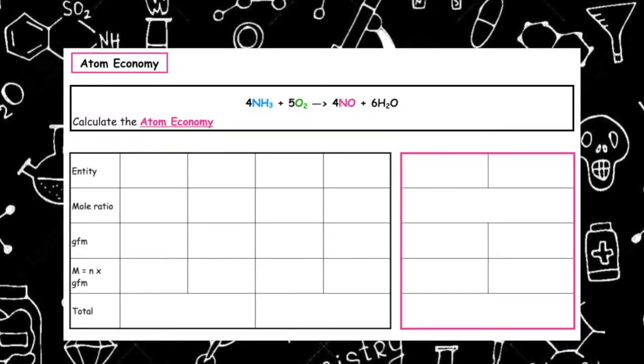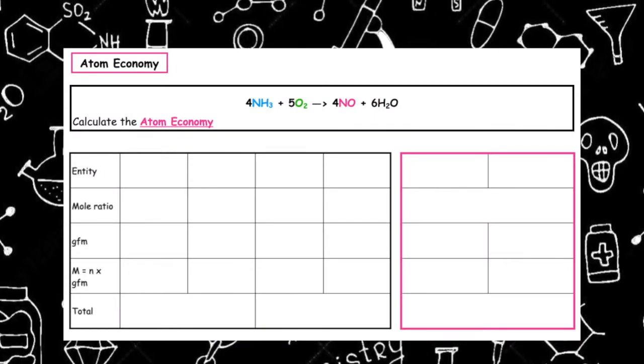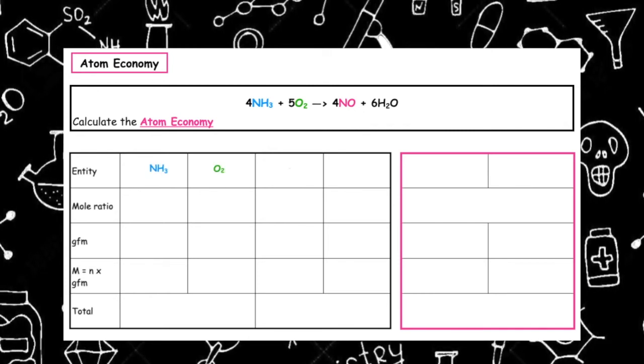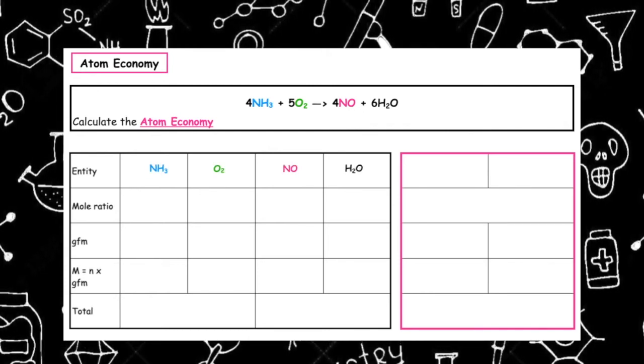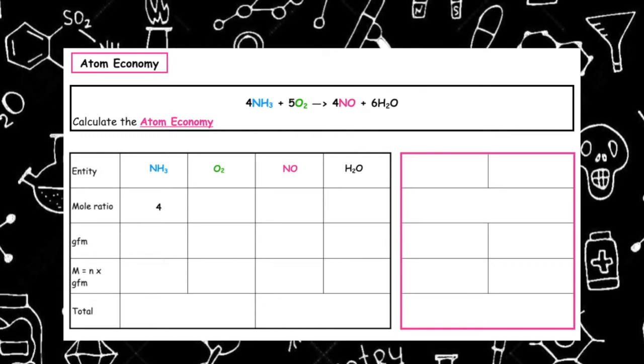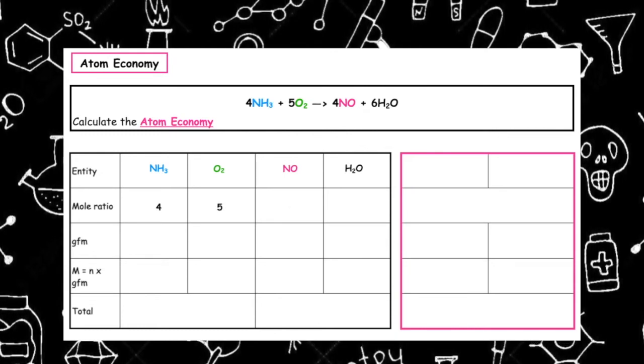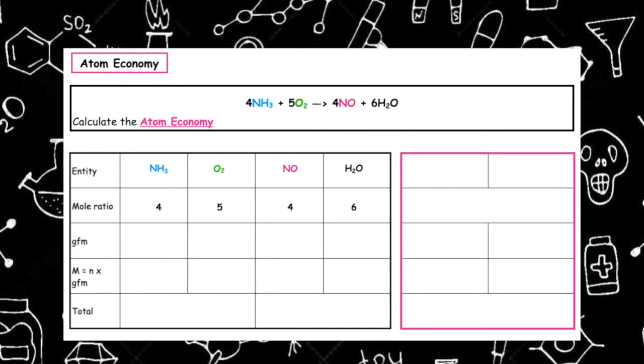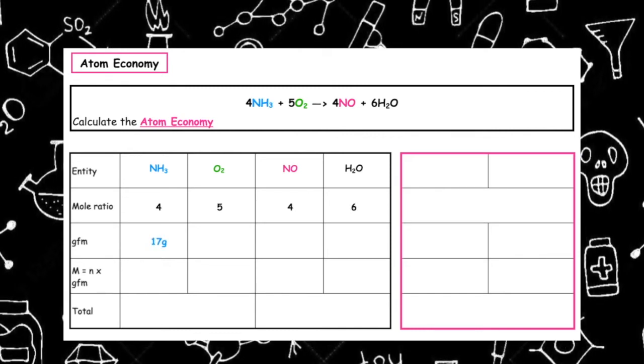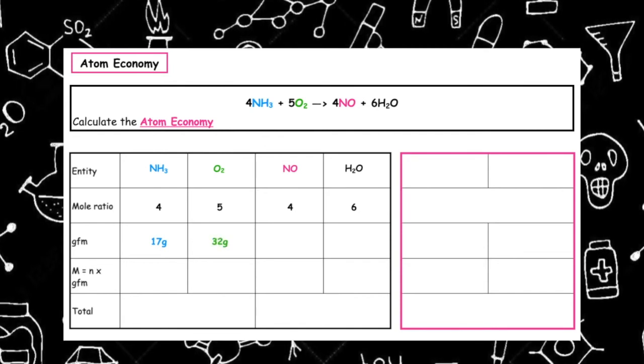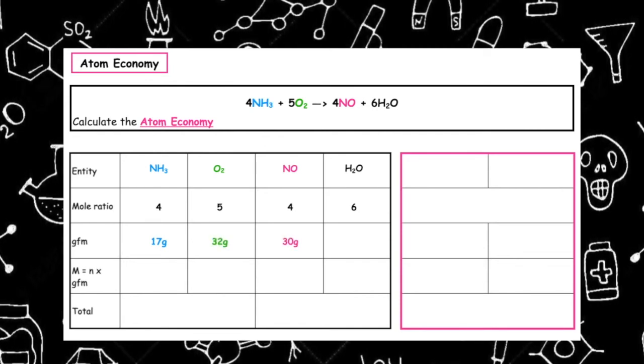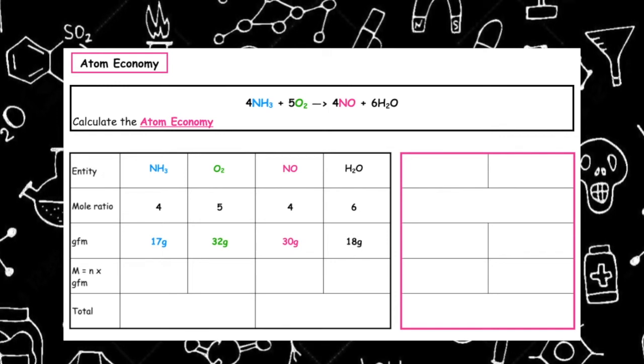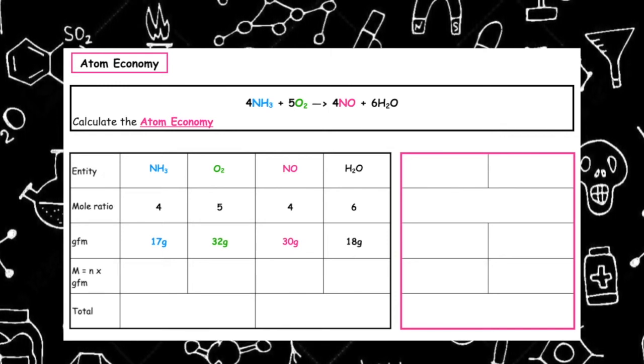Here is a second example where the mole ratio is a little bit different. So the first step is to write down all of our entities from the balanced equation, and then we want to do our mole ratio which is a 4 to 5 to 4 to 6 ratio. We then need to calculate the gfm. NH3 has a gfm of 17 grams, O2 comes out at 32 grams, NO 30 grams, and H2O is 18 grams.